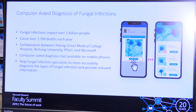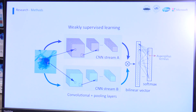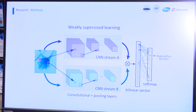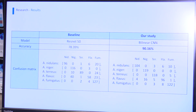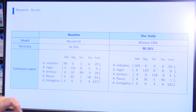What I want to do is provide a tool in the cloud that allows doctors to help make a diagnosis on the type of fungal infection. We're using a deep neural network called Binary CNN to help make the classification. With the Binary CNN, we increase the accuracy from the original 78 percent to 90 percent.